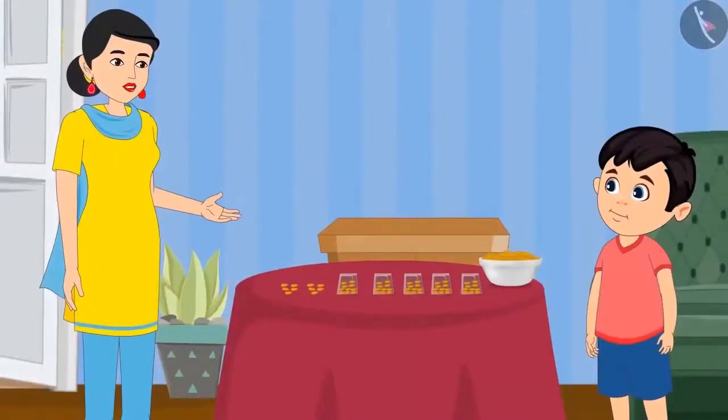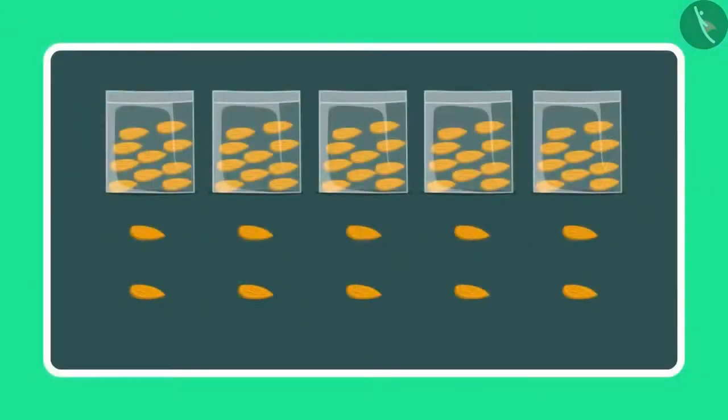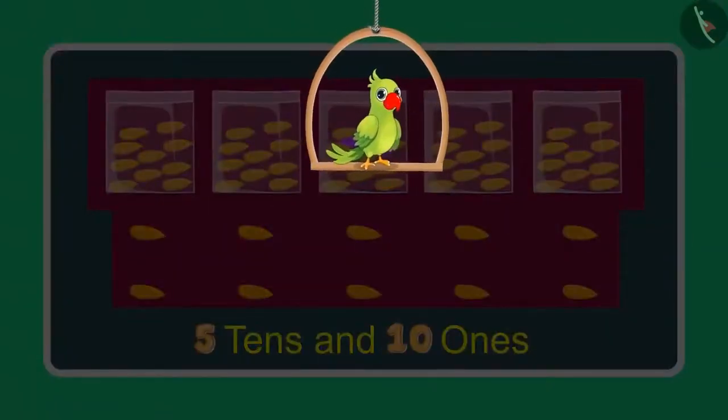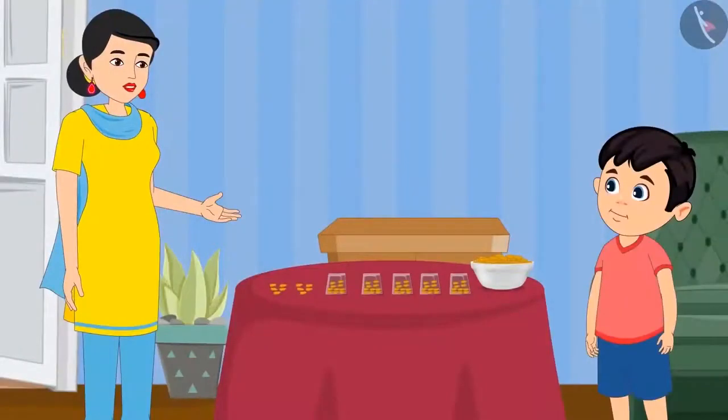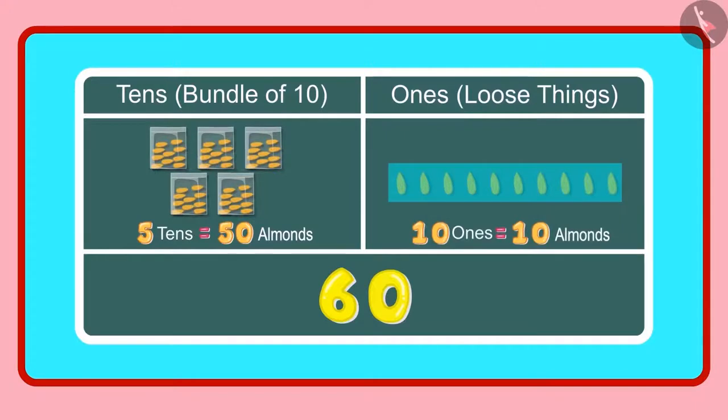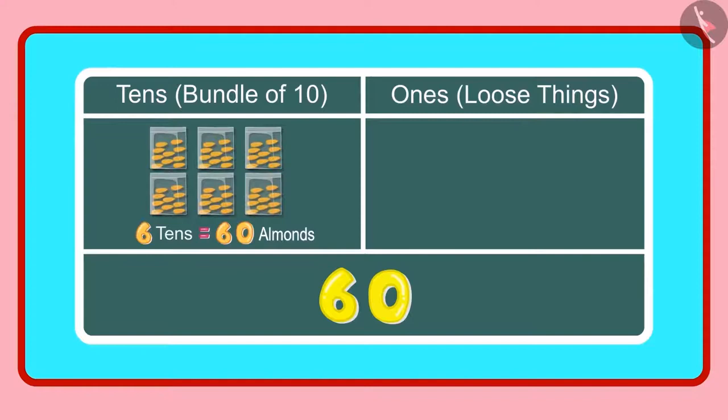So Chotu, how many ones and tens do you have right now? Mummy, now I have 5 tens and 10 ones. So children, what do you think? Has Chotu answered correctly? Let us see. Yes Chotu, you are right. 5 tens means 50 almonds and 10 ones means 10 almonds. And these 10 almonds will make 1 more tens. So in all we have 6 tens meaning 60 almonds. 60 almonds means 6 groups of 10 almonds each which becomes 6 tens.